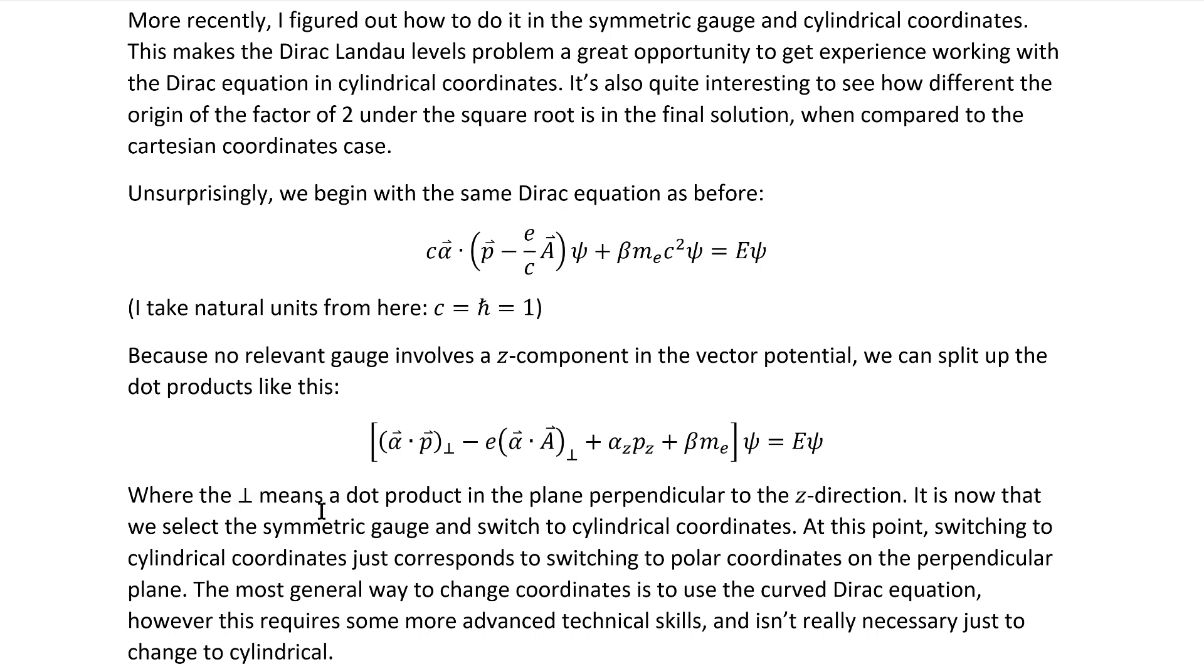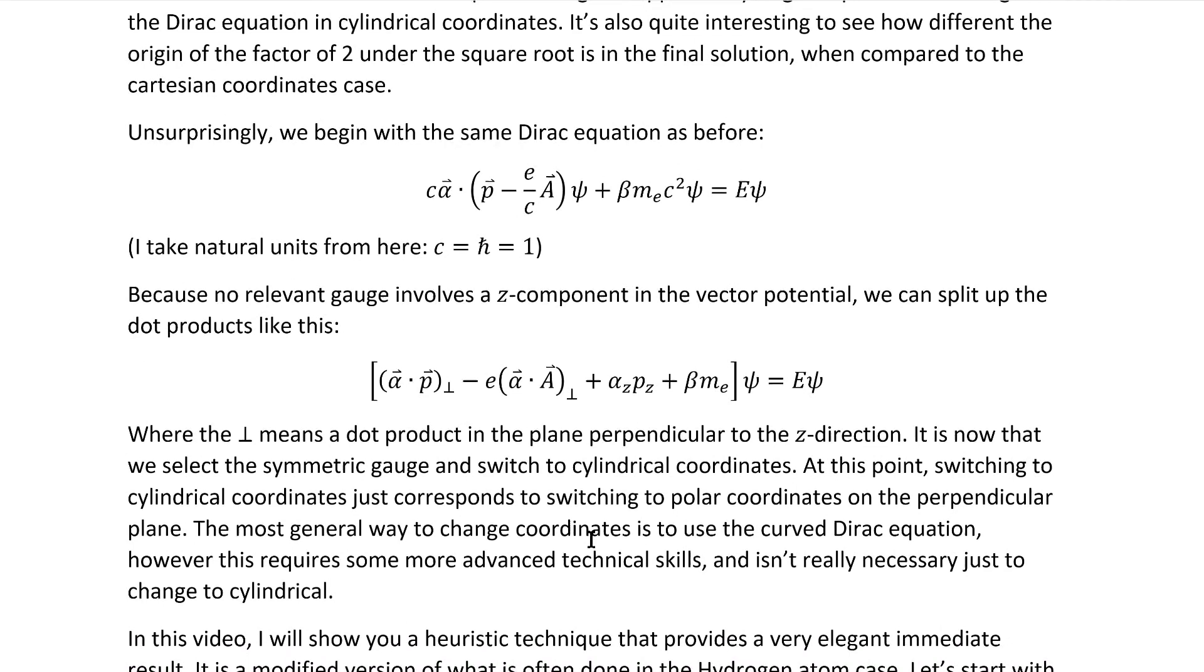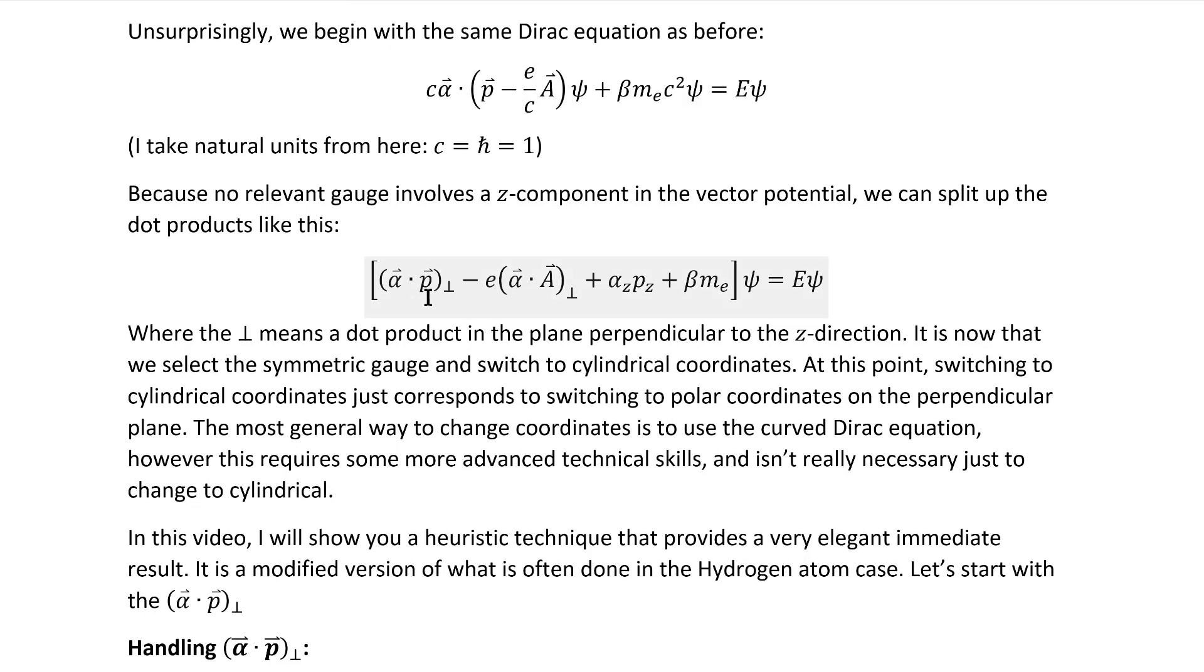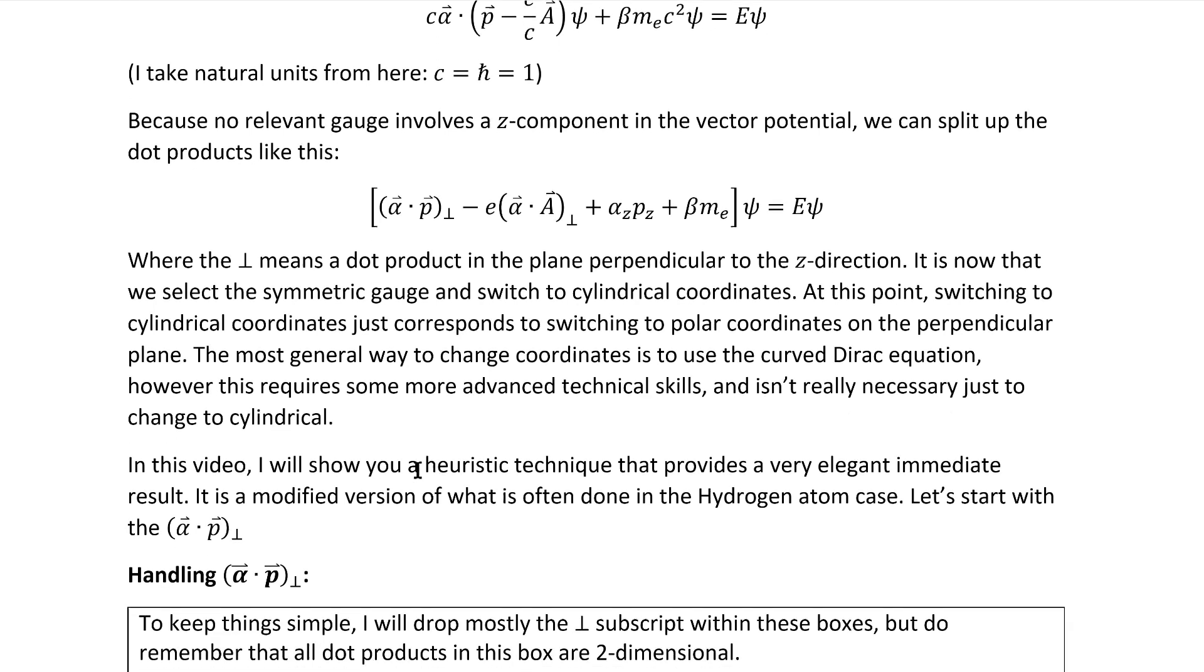where the perpendicular sign means a dot product in the plane perpendicular to the z-direction, meaning xy variables or theta r variables, as we'll be using. It's now that we begin the transition to the symmetric gauge and cylindrical coordinates. And because we've broken it down like this, with these perpendicular plane dot products there, switching to cylindrical coordinates just corresponds to switching to polar coordinates in that perpendicular plane. The most general way to change coordinates is to use the curved Dirac equation, which I actually do have a video on. However, this requires some more advanced technical skills and isn't really necessary just to change to cylindrical coordinates.